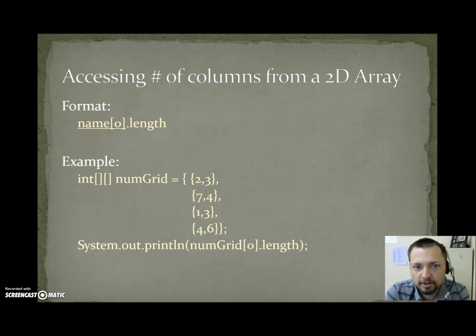Accessing the number of columns from a 2D array. Name bracket 0 bracket dot length. An example would be int bracket bracket numGrid, so the same numGrid from before: 2, 3, 7, 4, 1, 3, 4, 6. If we system.out.print grid bracket 0 bracket dot length, that would print 2.